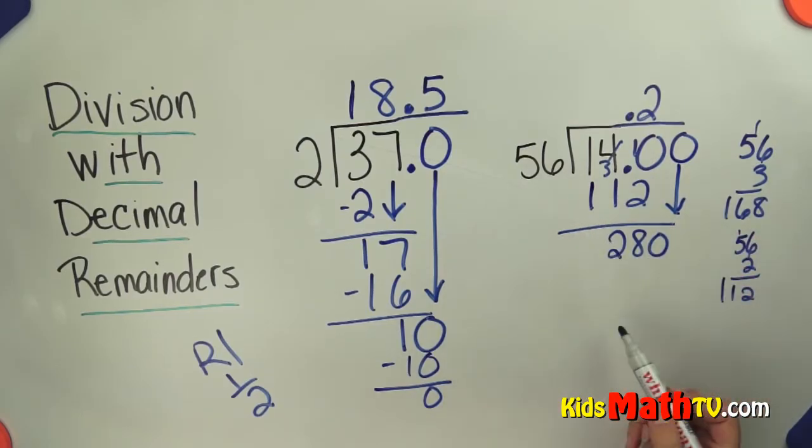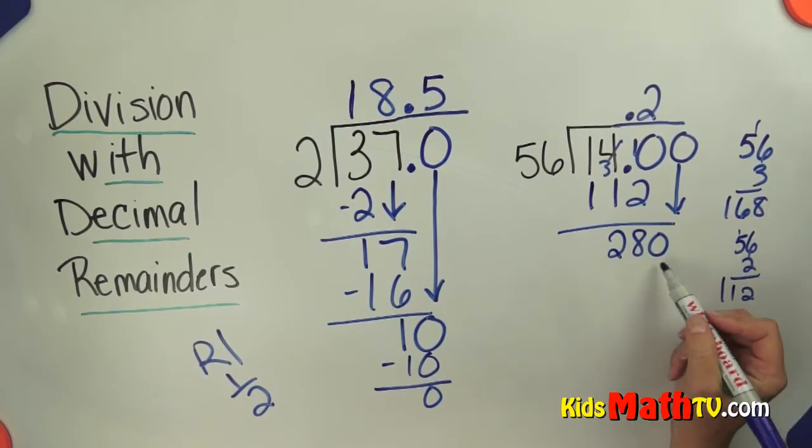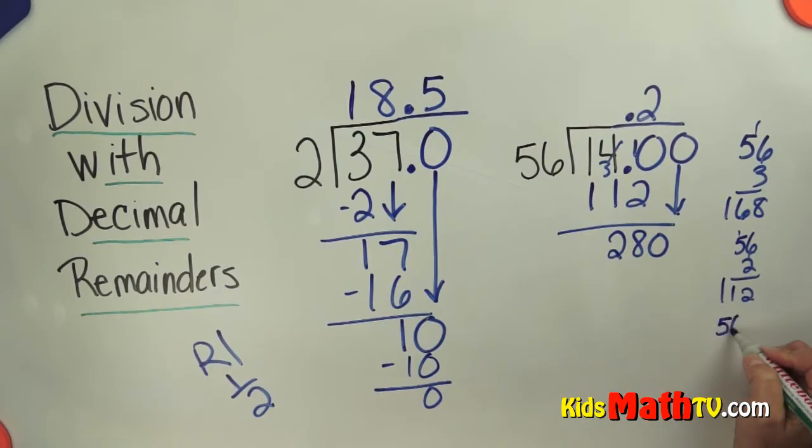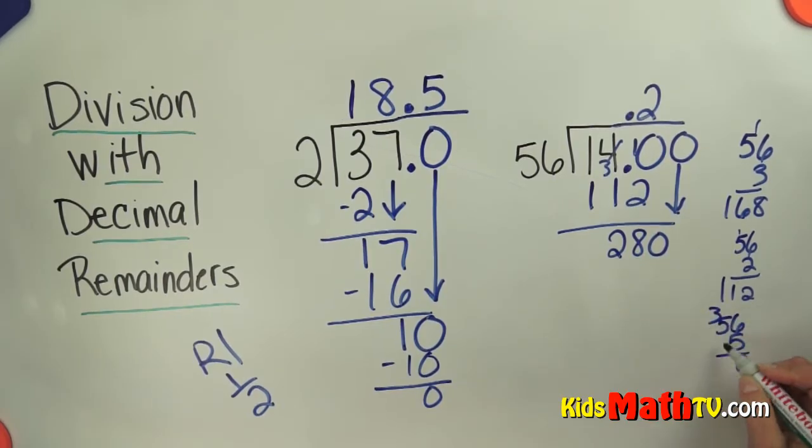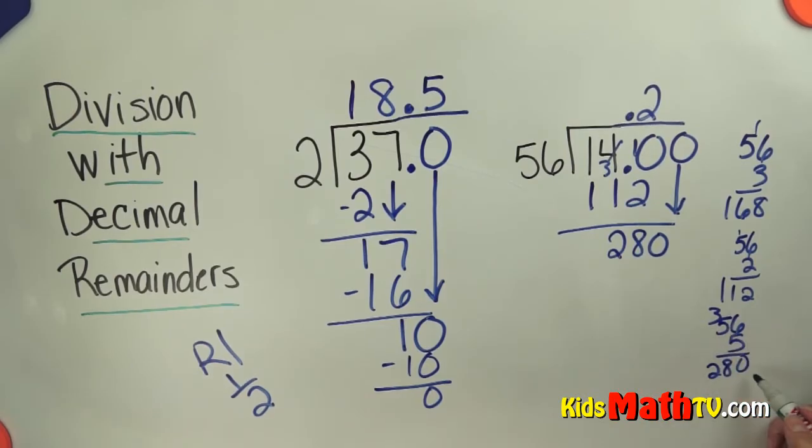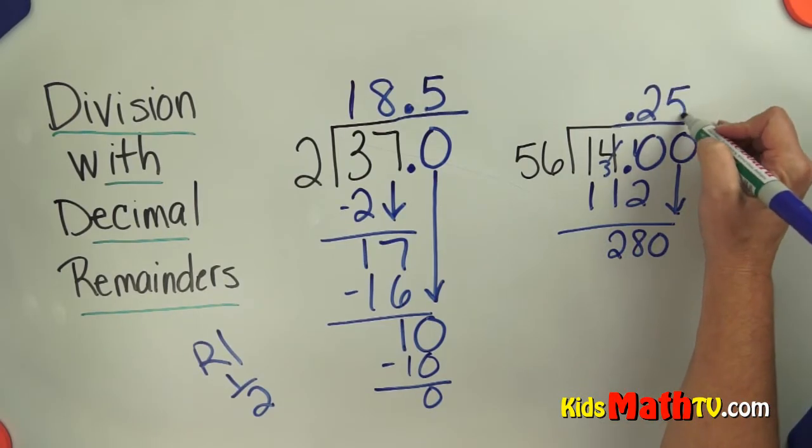How many 56's in 280? Well, it's more than this, so let me try 5. 56 times 5 is 280. So there are exactly 5.